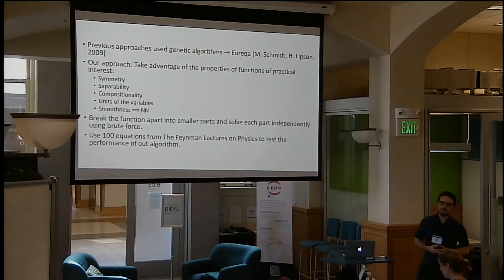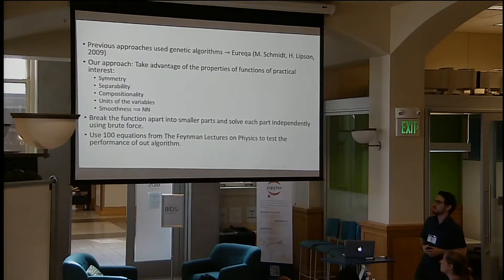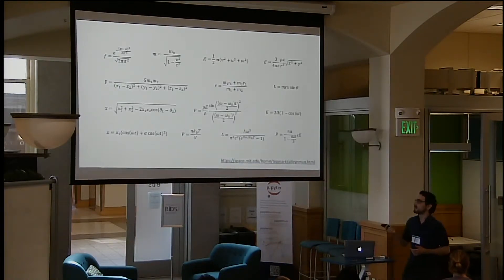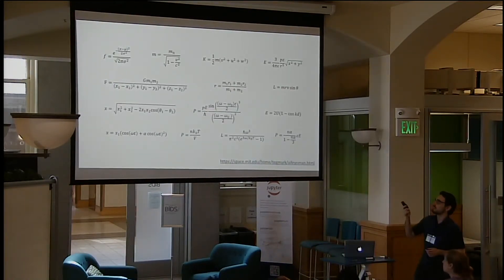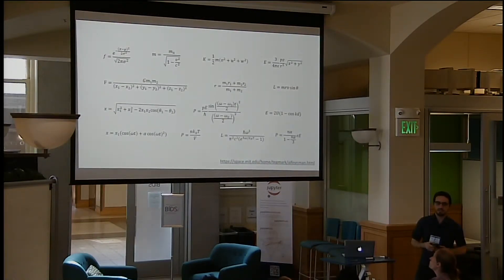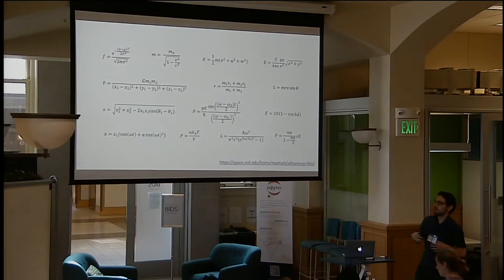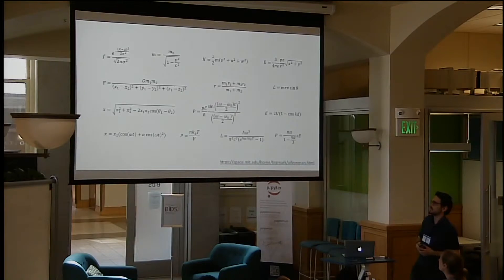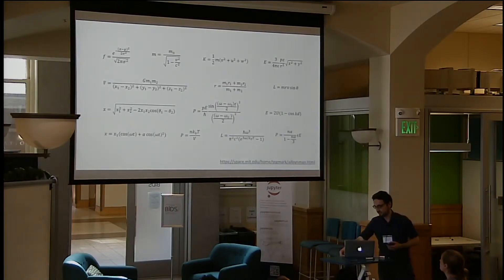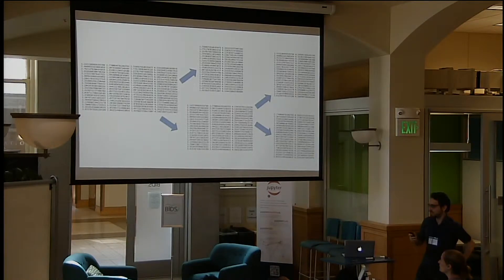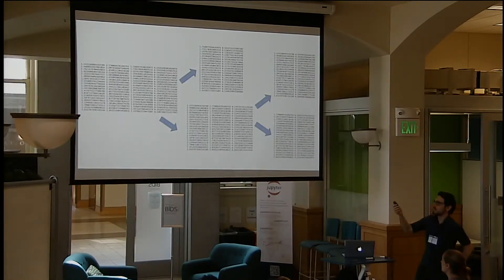We picked 100 algebraic equations from the Feynman lectures in physics to test the performance of our algorithm. For each function, we generate data for each variable and compute the value of the function at these data points. We pass the data to our algorithm. The data has three independent variables and the last column is the value of the function evaluated at these data points.